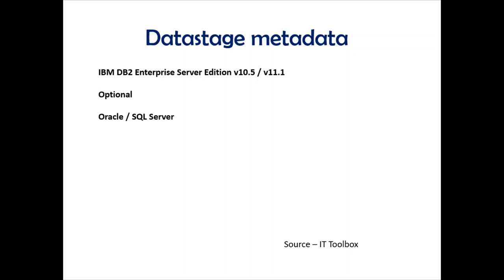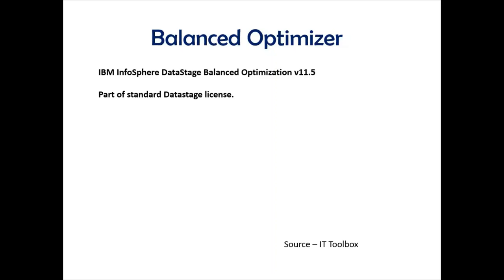There are new metadata requirements for DataStage. For Version 11.5 you need DB2 Enterprise Server Edition 10.5. With Version 11.7 you need Version 11.1 of DB2 if you're using it as the DataStage metadata database, or you can define your own Oracle or SQL Server databases as the metadata databases. Additionally, with Version 11.5, the Balance Optimizer was included as part of the DataStage license itself — previously it was available but required a separate license.